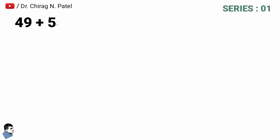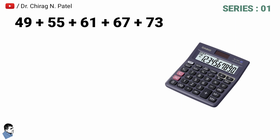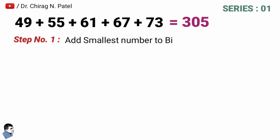Let's take the series 49 + 55 + 61 + 67 + 73. Using a calculator or traditional long summation, the answer is 305. But here you can also calculate this without a calculator in a very quick and easy way.